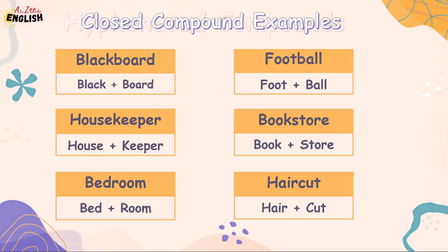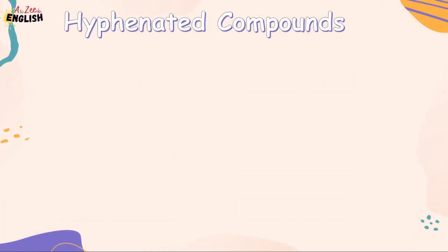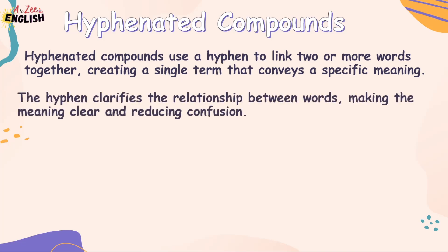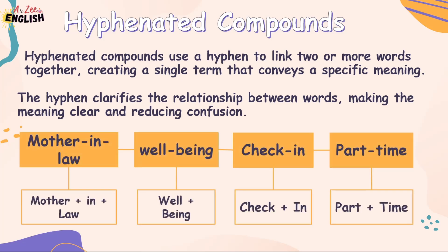The next type is hyphenated compounds. Hyphenated compounds use a hyphen to link two or more words together, creating a single term that conveys a specific meaning. The hyphen clarifies the relationship between words, making the meaning clear and reducing confusion. For example, mother-in-law is a combination of three words but acts as a single unit with a specific meaning.